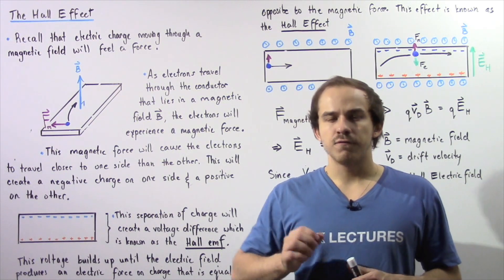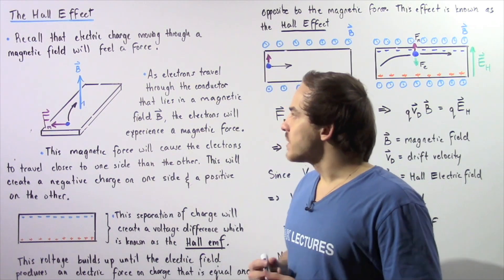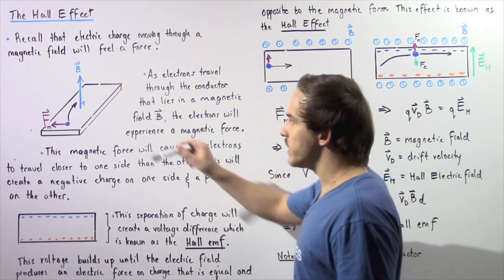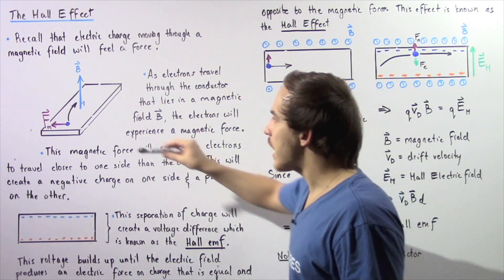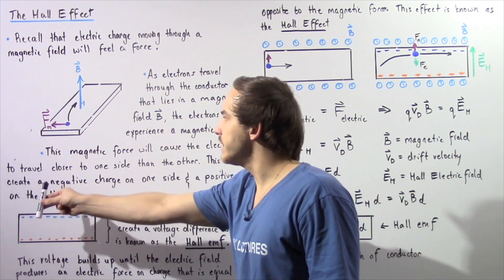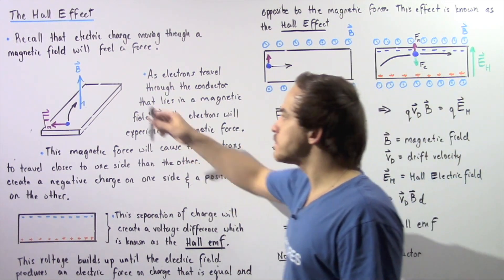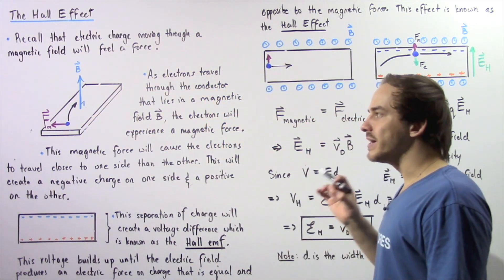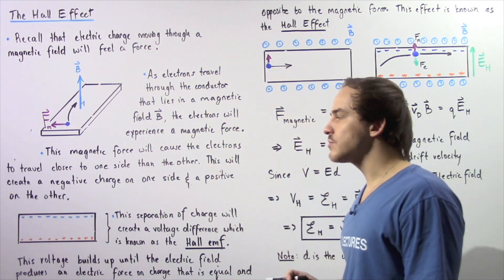The direction of the force can be given by using the right hand rule. Let's begin by supposing we have a sheet of metal as shown. Now as electrons are traveling through our sheet of conducting metal, let's suppose they're traveling in this general direction. Our magnetic field, which points perpendicularly upward with respect to the plate, will create a magnetic force that will act on that moving electron.